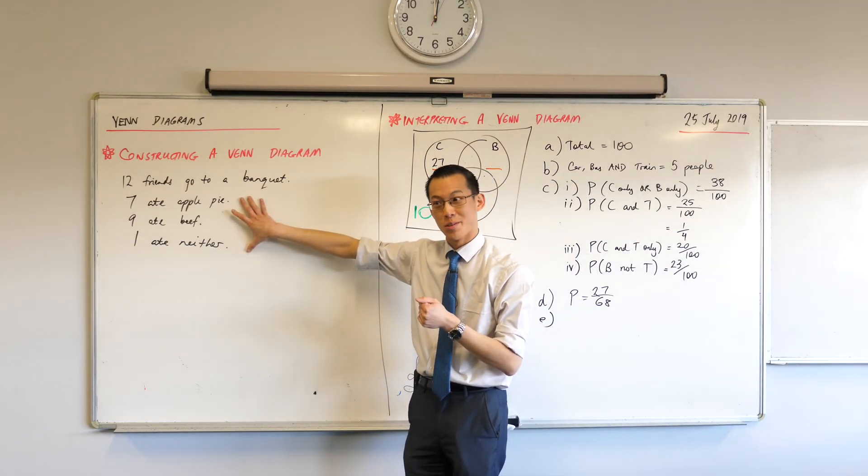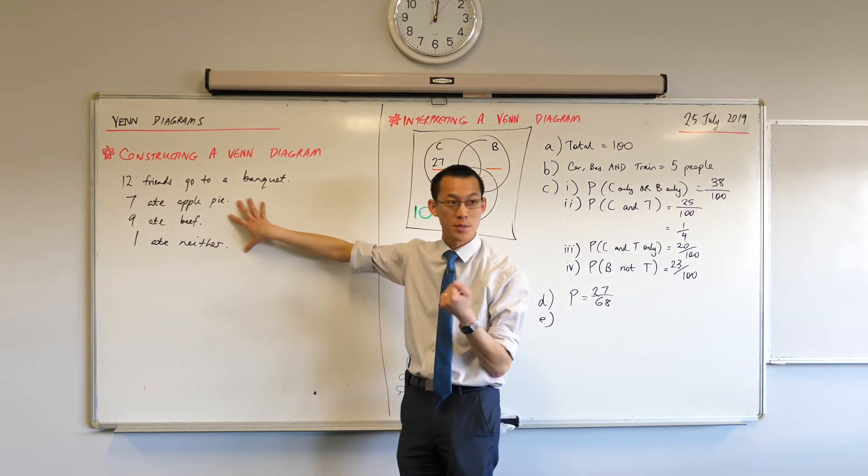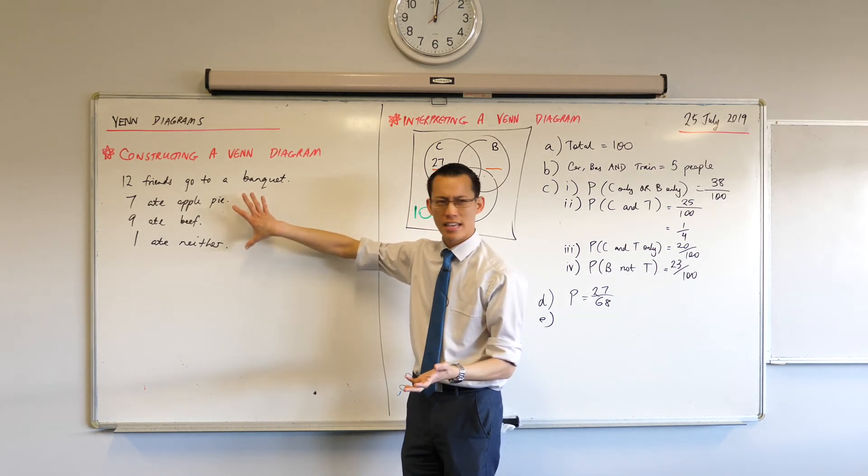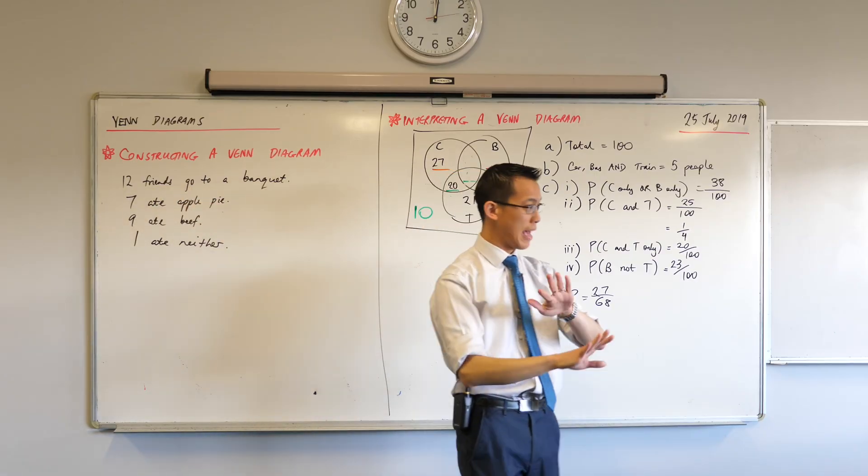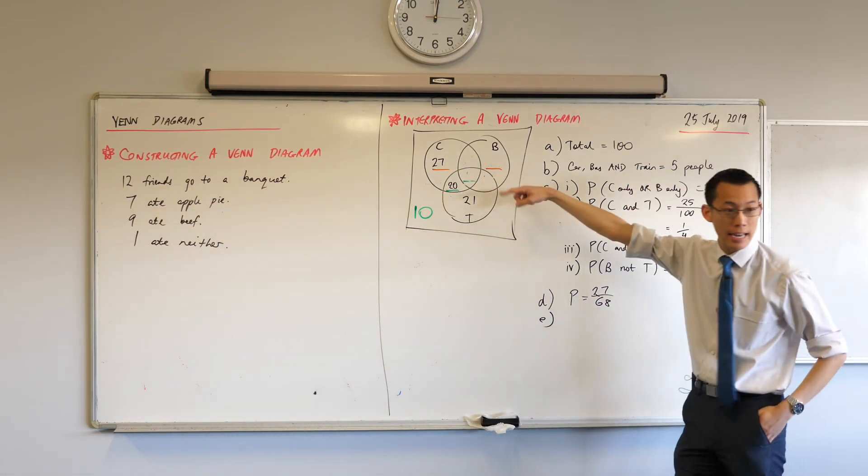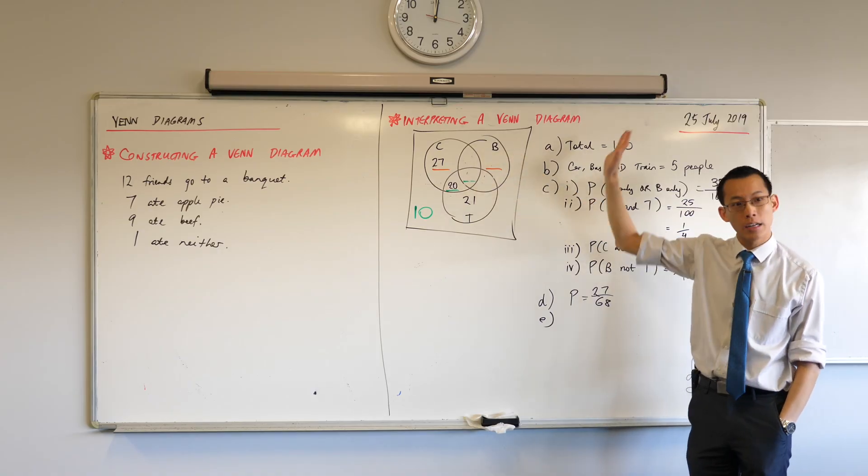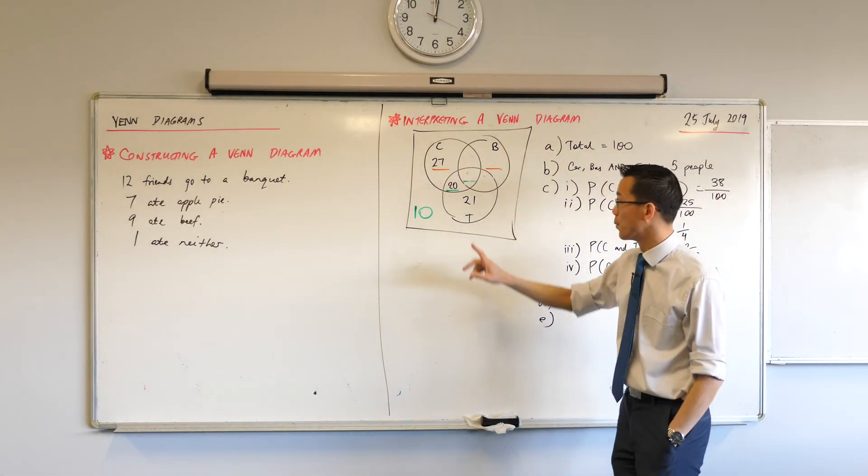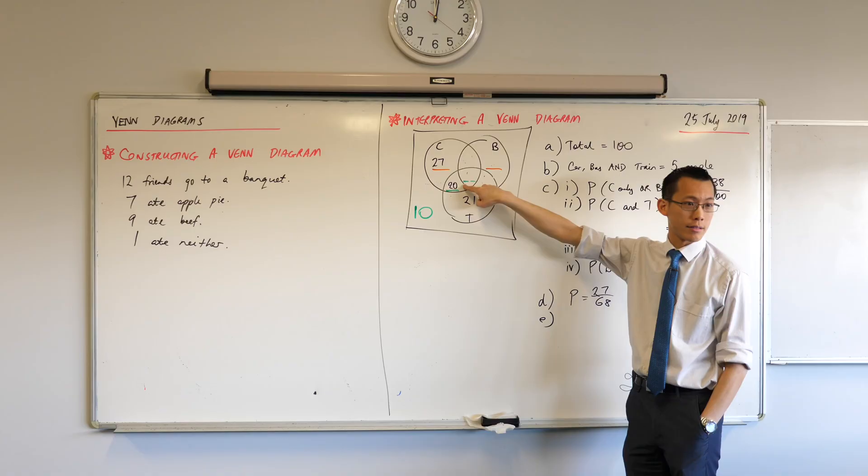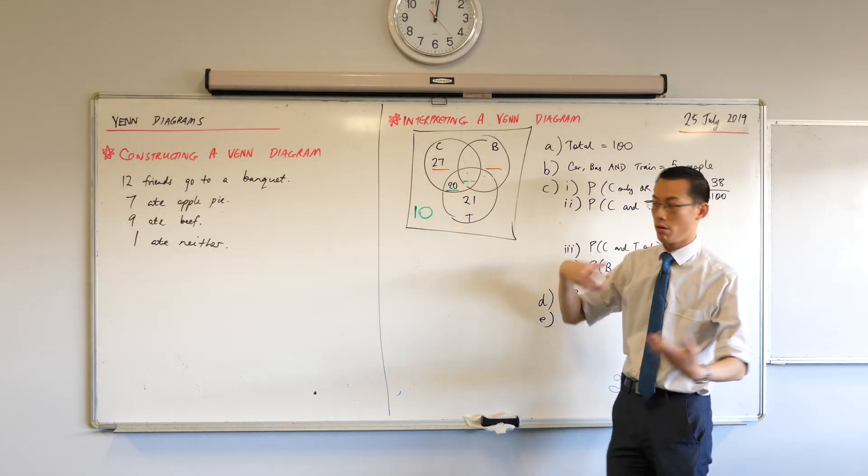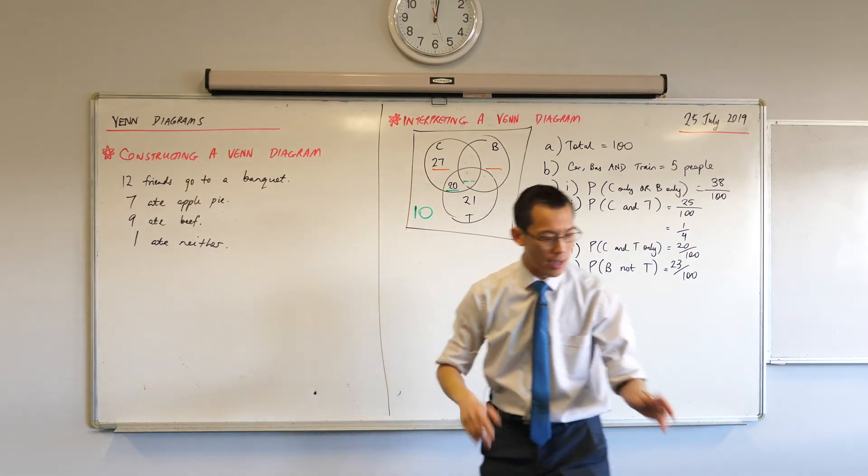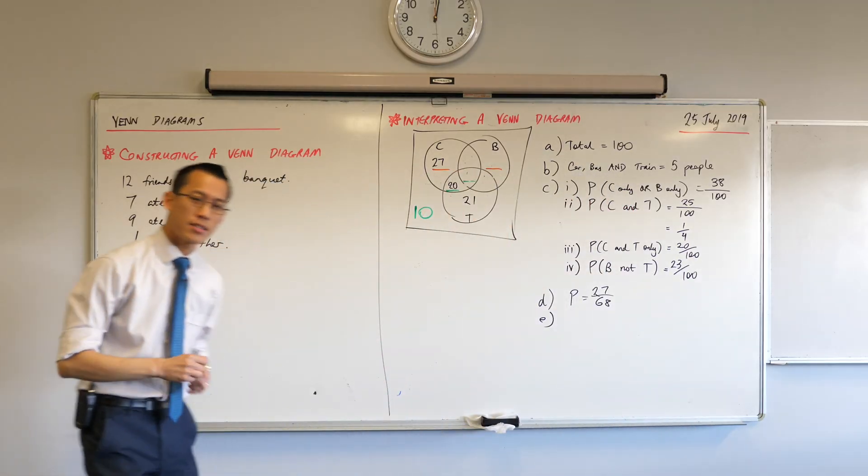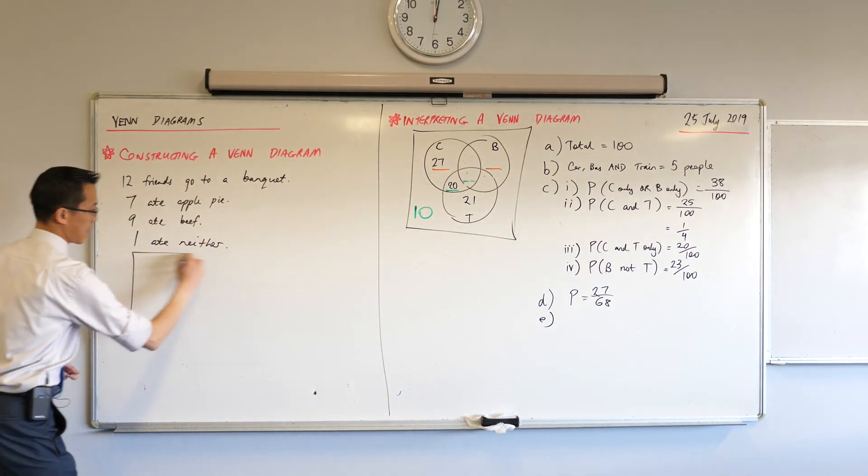7 plus 9 plus 1, last I checked was 17. So there's more people here, apparently, than are at the banquet. So what we're actually having a look at here is that, like in our original Venn diagram, clearly there must be some people who did more than one thing. Does that make sense? That's the only way we can account for these extras that seem to appear. So underneath where you've got this information, let's visualize this by drawing like before.